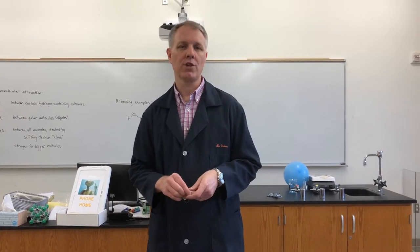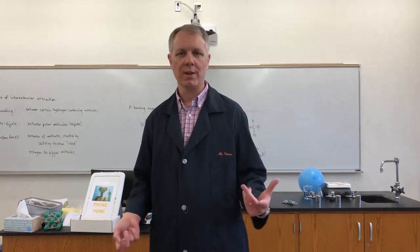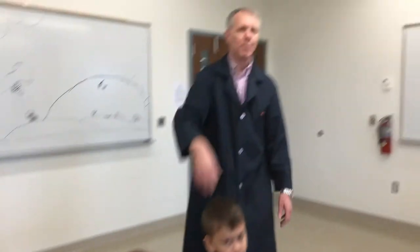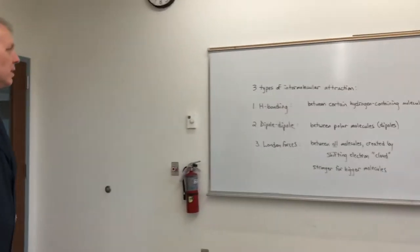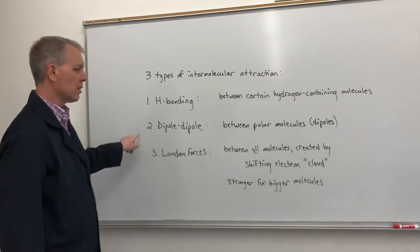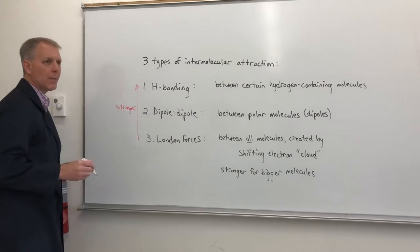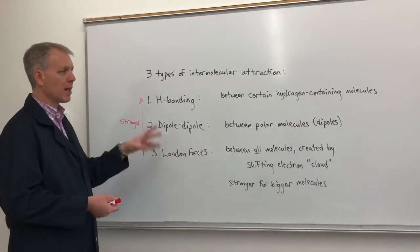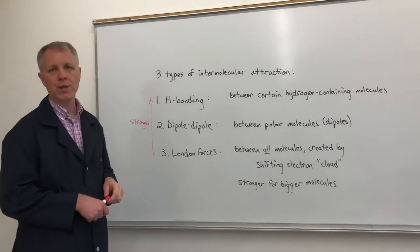It turns out that attractions between polar molecules are not the only type of attraction between molecules. There are three major kinds of intermolecular attractions, and it's those attractions that allow different phases to exist. I have these ranked from strongest to weakest. The type of attraction between polar molecules, or dipoles — dipole meaning two poles — we call dipole-dipole attractions, and those are medium-strength attractions.